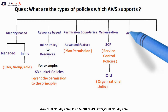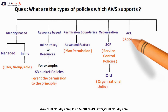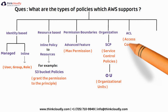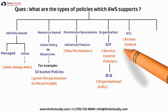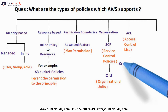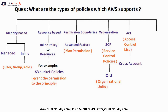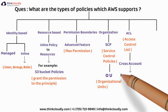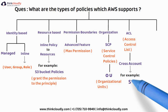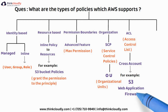Then you have ACL, which stands for Access Control List. ACLs control which principals in which account can access a resource. They are generally used for cross-account access, and the resources can be S3, Web Application Firewall, VPC, and so on.